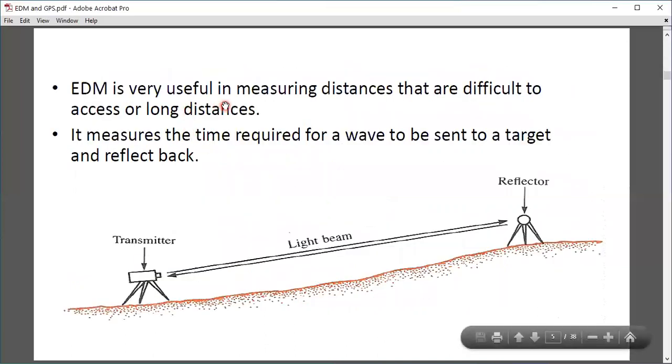EDM is very useful in measuring distances that are difficult to access or long distances. It measures the time required for a wave to be sent to a target and reflect back. You can see in the diagram: one end is a transmitter and the other is a reflector. The waves are sent from the transmitter and reflected back from the reflector.